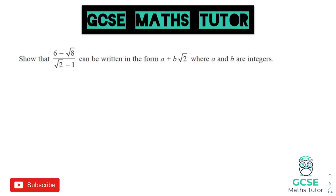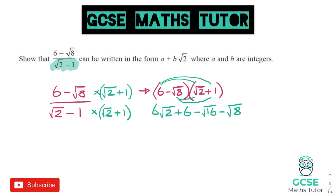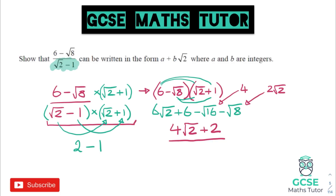If you have slightly more complicated surds, you need to think about your difference of two squares — so identify what's on the bottom and multiply by the same thing with the different sign. You may have to expand some double brackets here, being very careful with your double bracket process and simplifying any surds along the way. When we simplify this we get 4 root 2 plus 2 on the top, and on the bottom we get 2 minus 1 with that difference of two squares, where you just multiply the firsts and the lasts. If you have a 1 on the bottom it can cancel out, but again look to simplify.